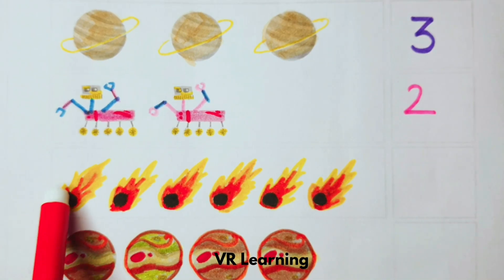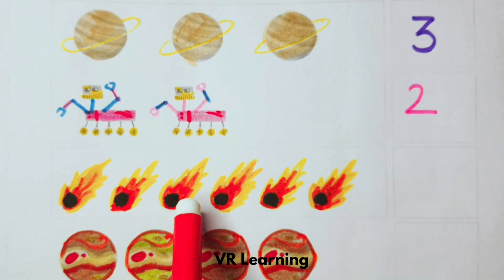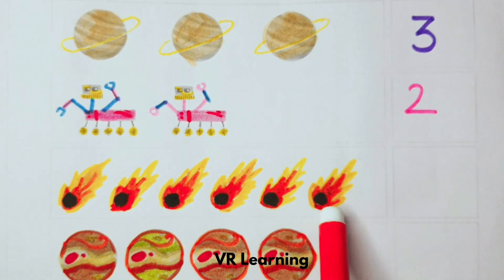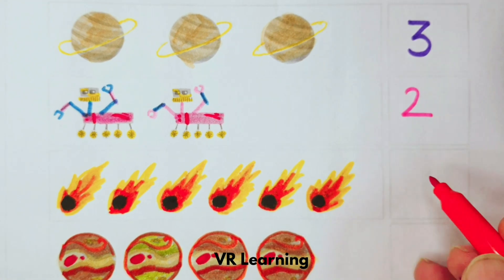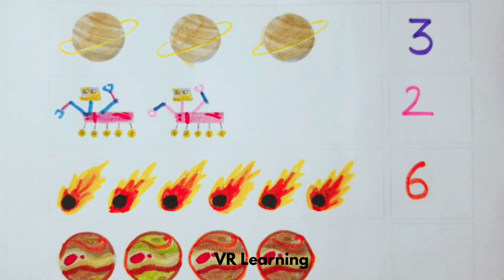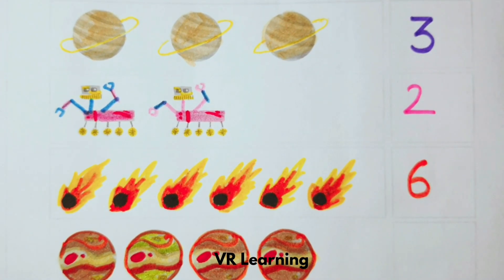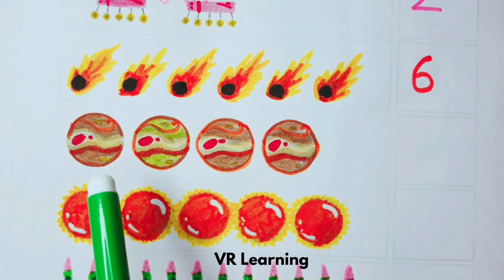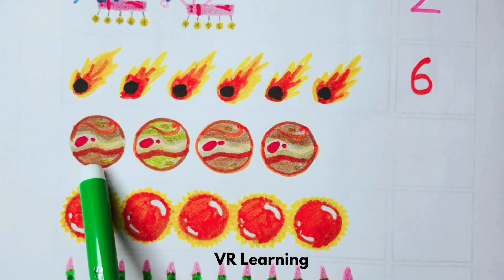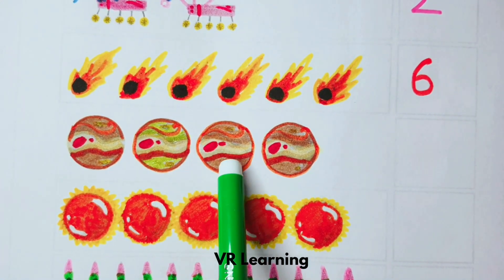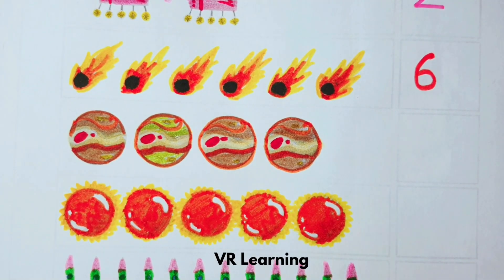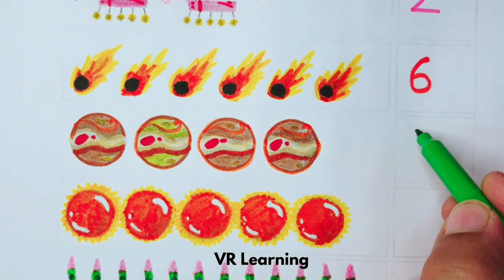One, two, three, four, five, six. Write the number six in the box. One, two, three, four. Write the number four in the box.